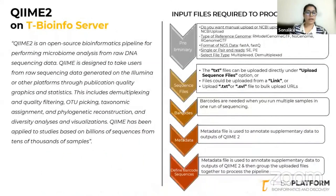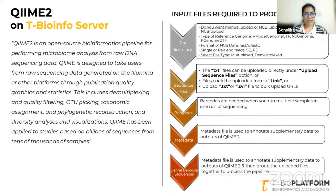Now let's talk about the QIIME2 pipeline. The QIIME2 pipeline is an open-source bioinformatics pipeline for performing microbiome analysis from raw DNA sequencing data, designed to take users from raw sequencing data generated on Illumina or other platforms through publication-quality graphics and statistics.